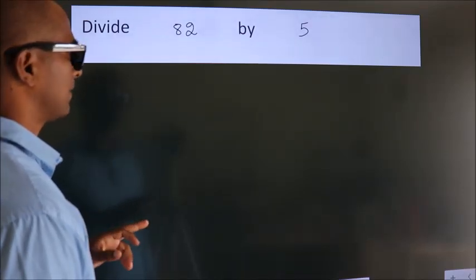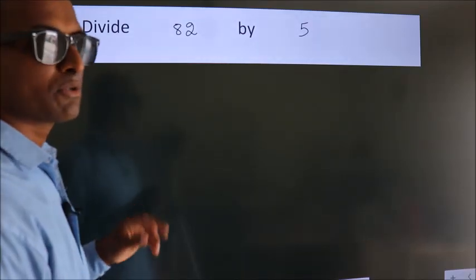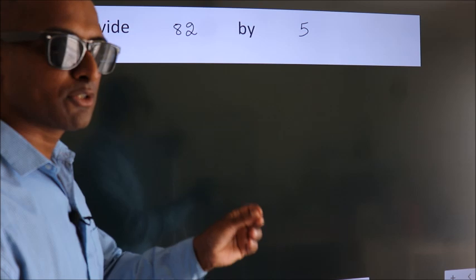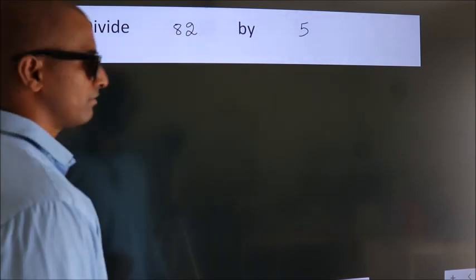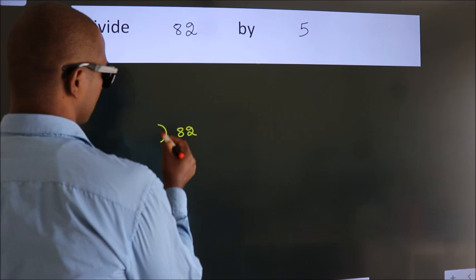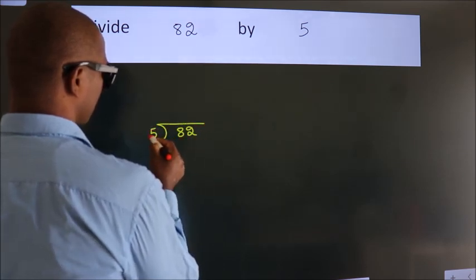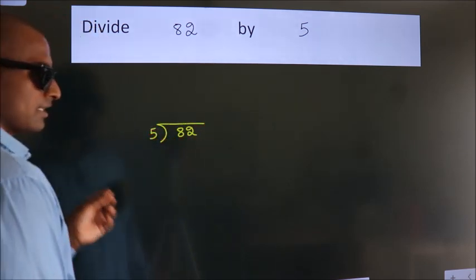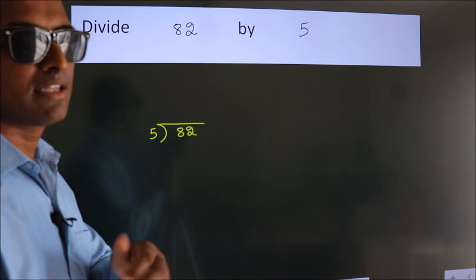Divide 82 by 5. To do this division, we should frame it in this way. 82 here, 5 here. This is your step 1.